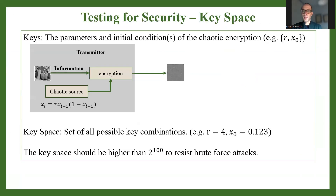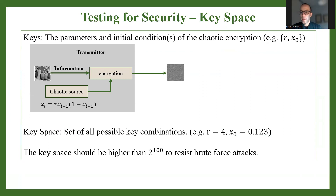Now, what is the keyspace? Say I'm using a very simple chaotic system, for example the logistic map, in order to encrypt information by performing the steps mentioned above. So what are the settings for my chaotic map? The settings are the value of the key parameter r and the initial condition x0.